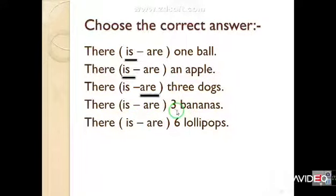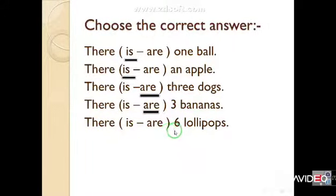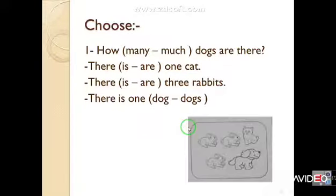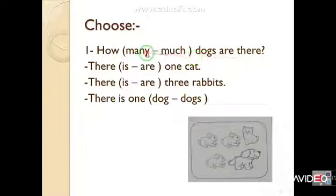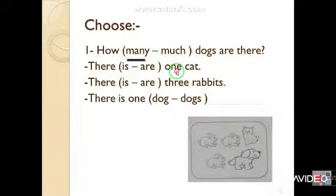Number four: three bananas — we are talking about more than one, so: 'There are three bananas.' Number five: six lollipops — six! So: 'There are six lollipops.' Now, how many dogs are there? 'There is one cat' — just one, so: 'There is one cat.'